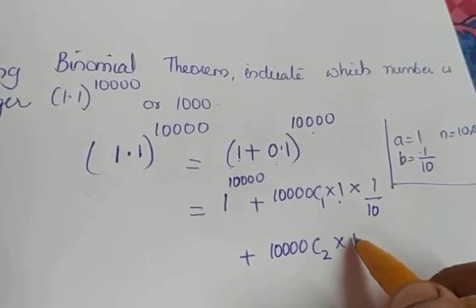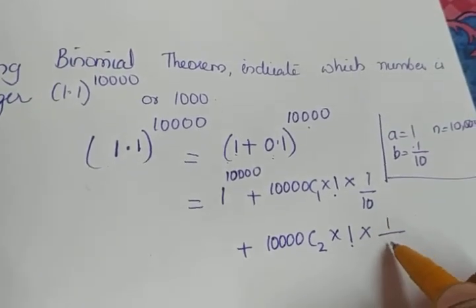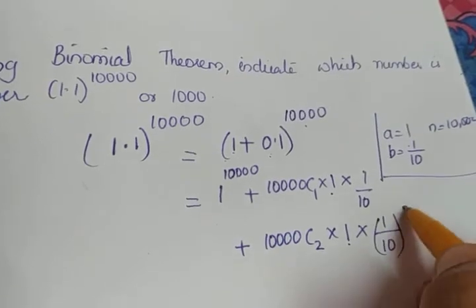Plus the next value is 10,000C2 into 1 raised to, we have to decrease the power again of 1, but whatever be the power the value remains the same as 1 itself, so I'm leaving, into 1 by 10 the whole square, plus etc.